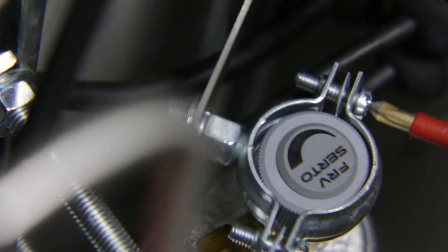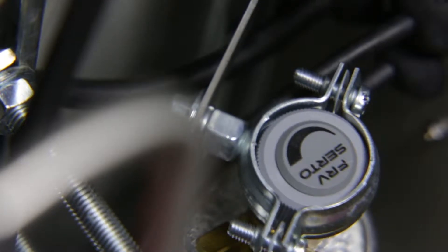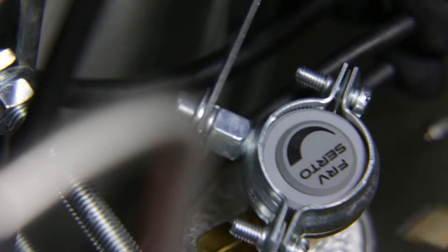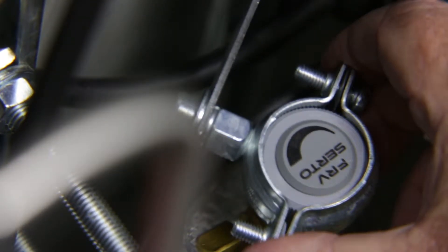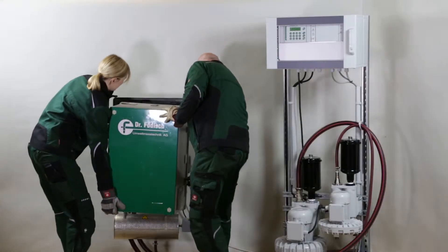Lock the valve for the dilution air against accidental readjusting. Put the cover on the enclosure and fix it.